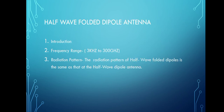The next topic is the half-wave folded dipole antenna. A folded dipole is an antenna with two conductors connected on both sides and folded to form a cylindrical closed shape, with the feed given at the center. The length of the dipole is half the wavelength, hence it is called the half-wave folded dipole antenna.